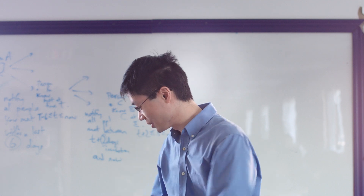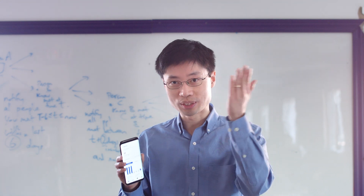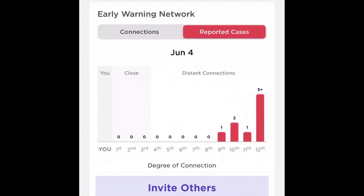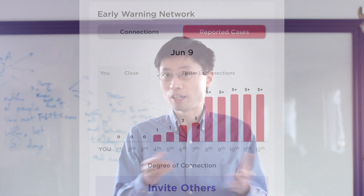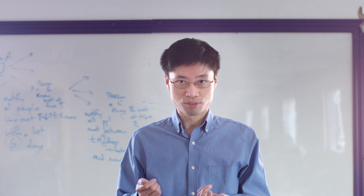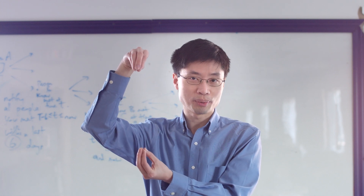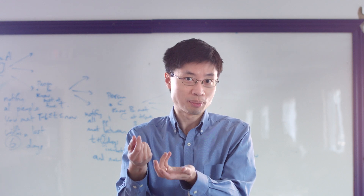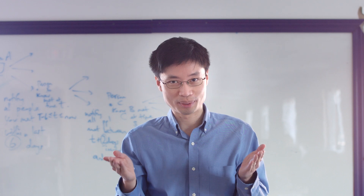This is actually what we show in the app that we have. Inside this app, we animate over time — as the date is changing — how many COVID cases there are and how far away they are from you. For example, if you see a bar of some height, that's telling you how many people have COVID, and the height at a particular degree of separation tells you how many relationships away the cases are.